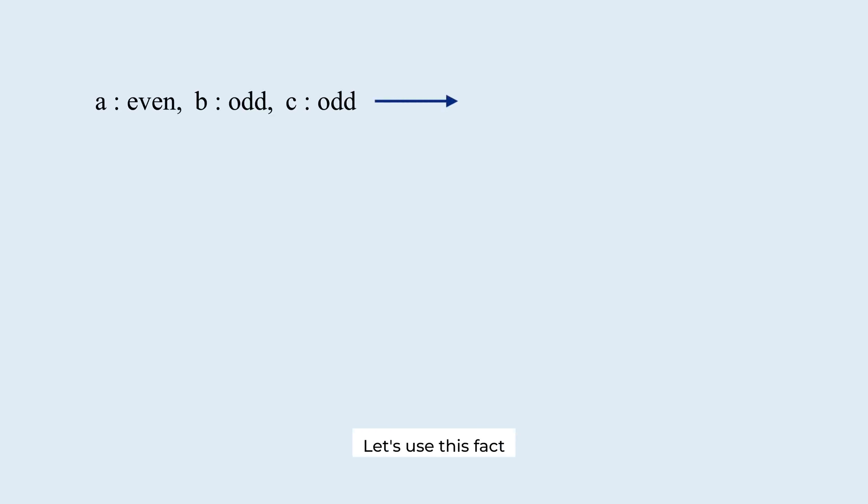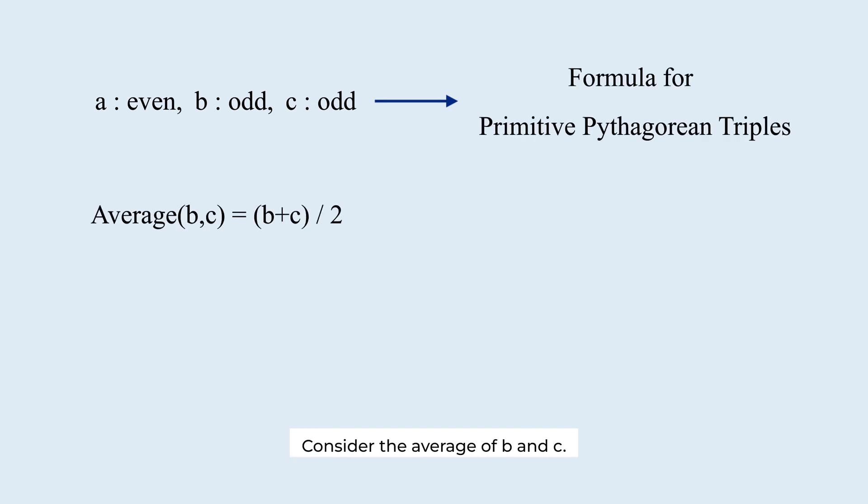Let's use this fact to derive a formula for primitive Pythagorean triples. Consider the average of b and c. Since both are odd, their average is always even. Let that average be s. Let the difference between that average and either of the two numbers be t. Then, we can write b equals s minus t, c equals s plus t. Both b and c are expressed using s and t.